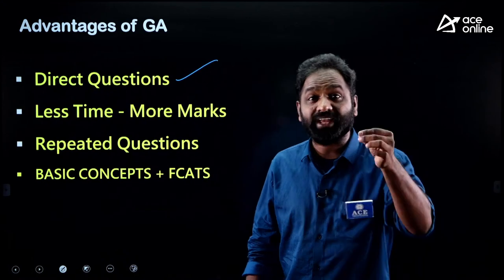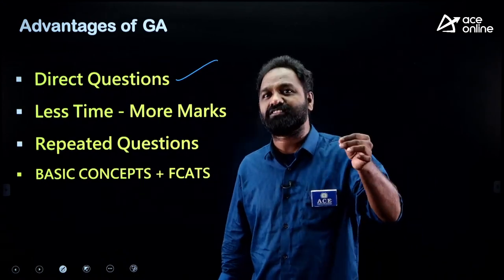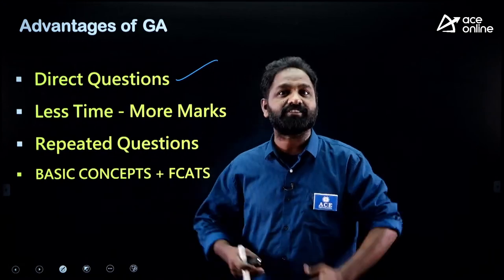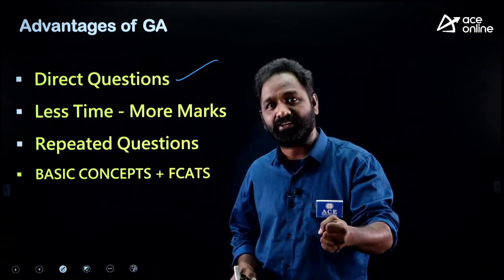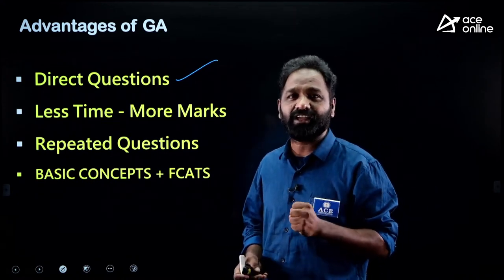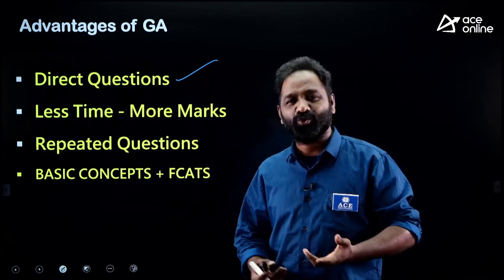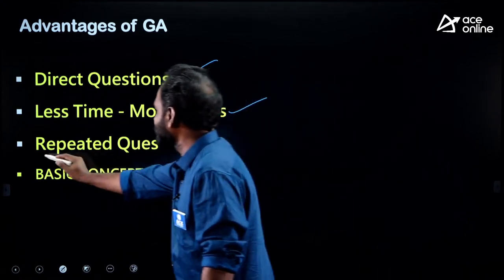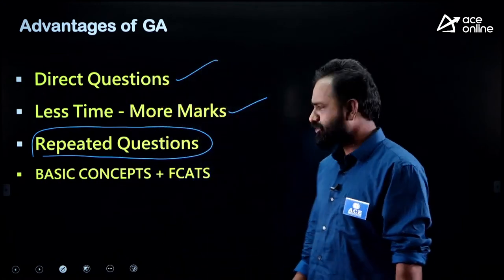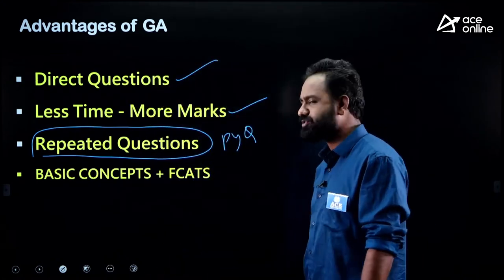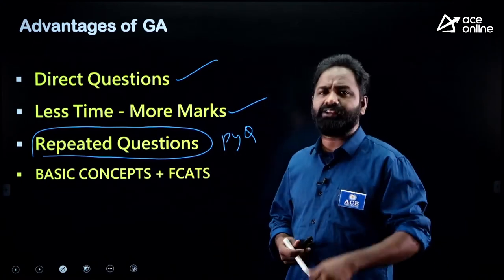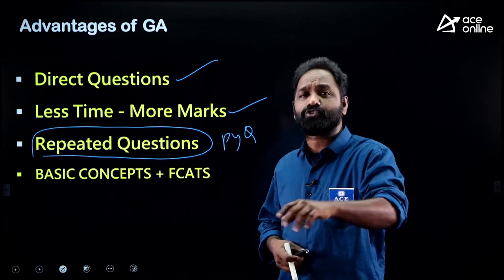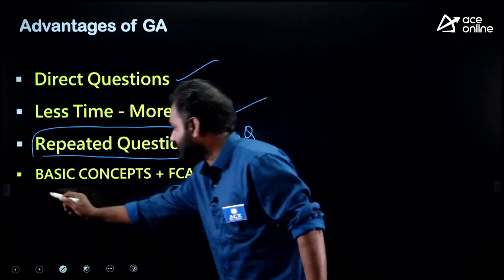Catching the pulse of the examiner is very important. Every year in CGL Tier 1 General Awareness, you need to understand how the examiner frames questions in each subject. If you catch that pattern, you will definitely get the marks and ultimately the job. It will take less time because by looking at the question you can give the answer. Most of the questions are repeating — practicing previous year questions gives you the pattern and repeated concepts.